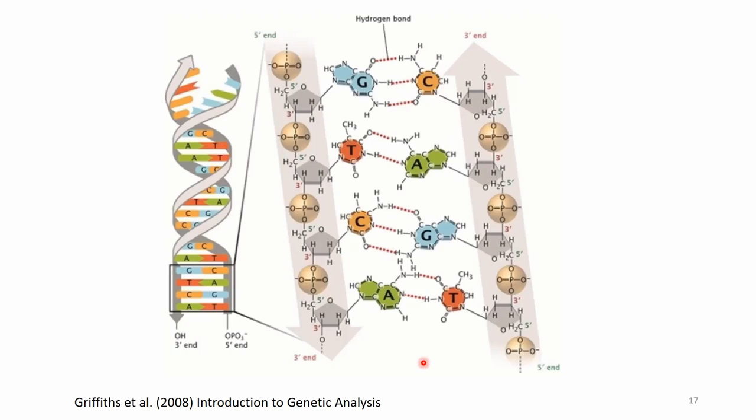The three and five refer to the numbers of the carbon atoms on the deoxyribose. Here is the deoxyribose — at each edge there is a carbon atom. Counting them: one, two, three, four, and five. The phosphates link to the deoxyribose at carbon atom number three and carbon atom number five.